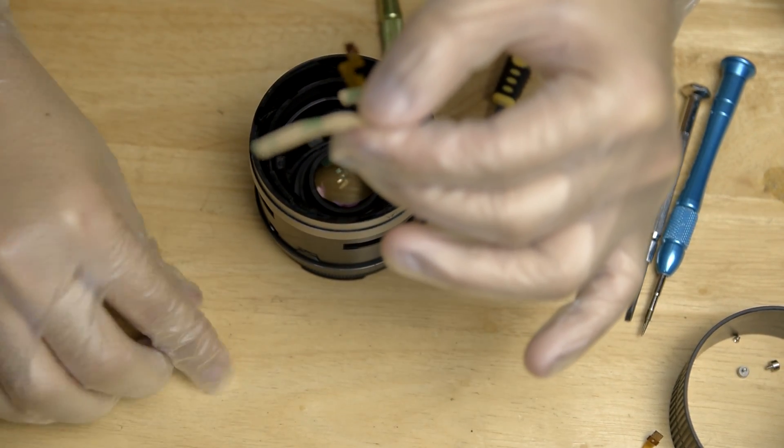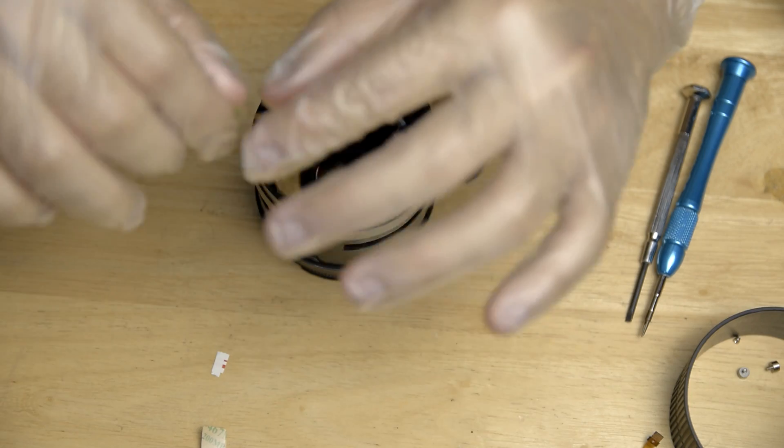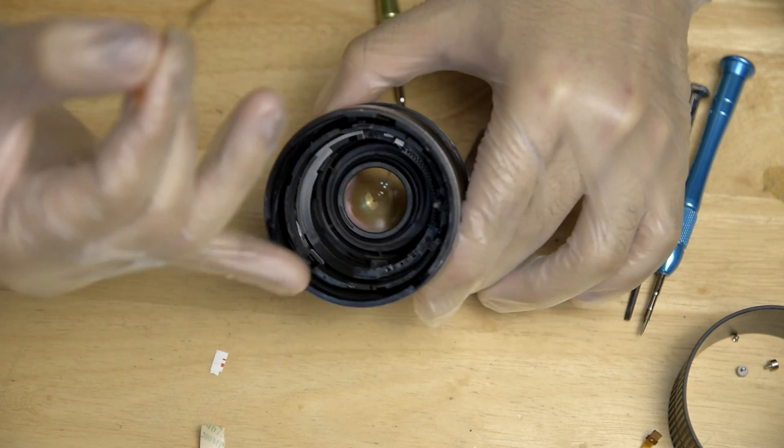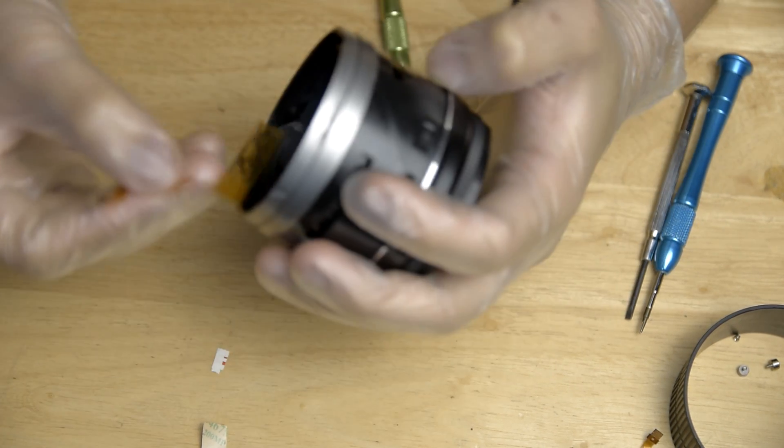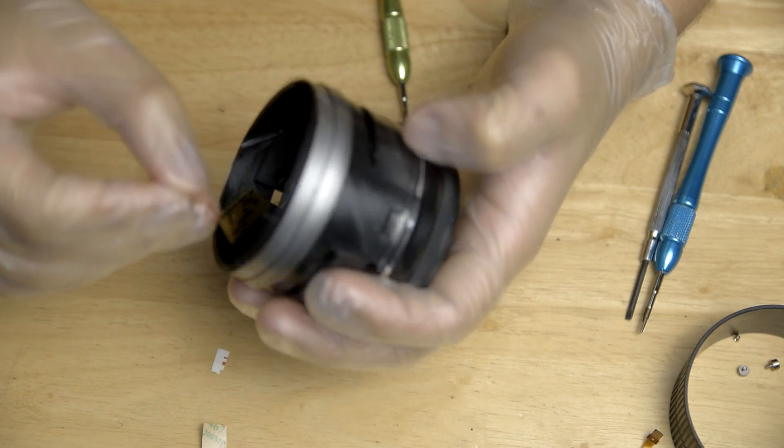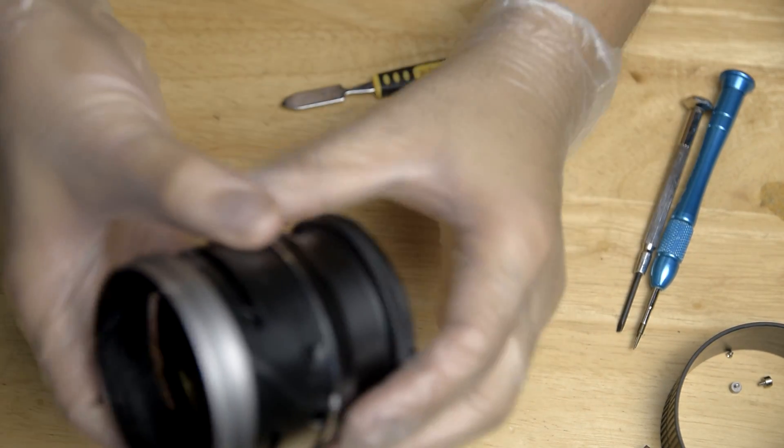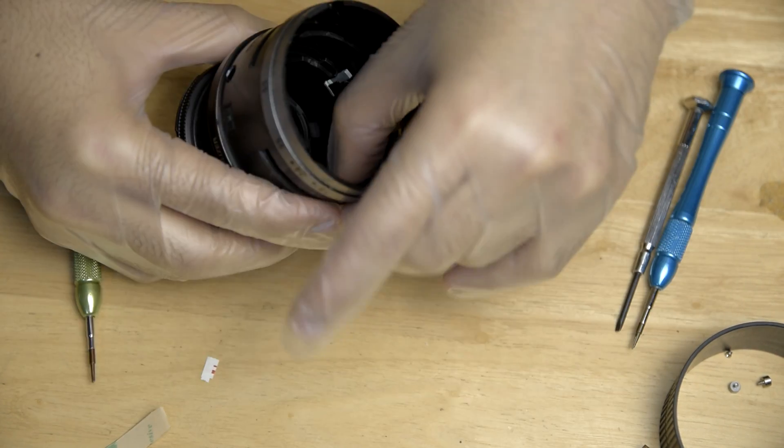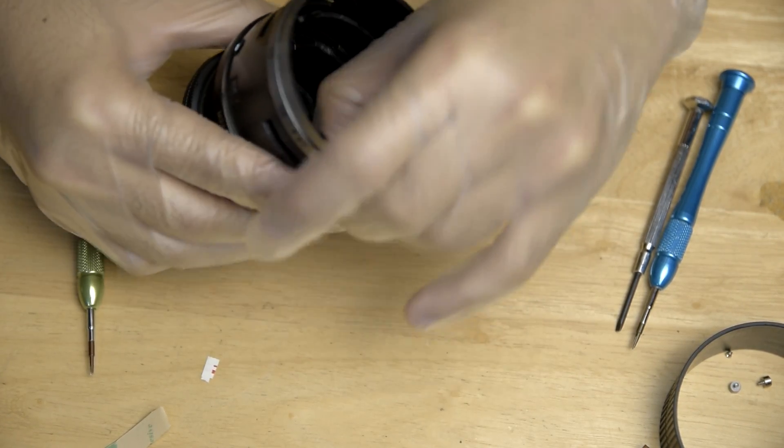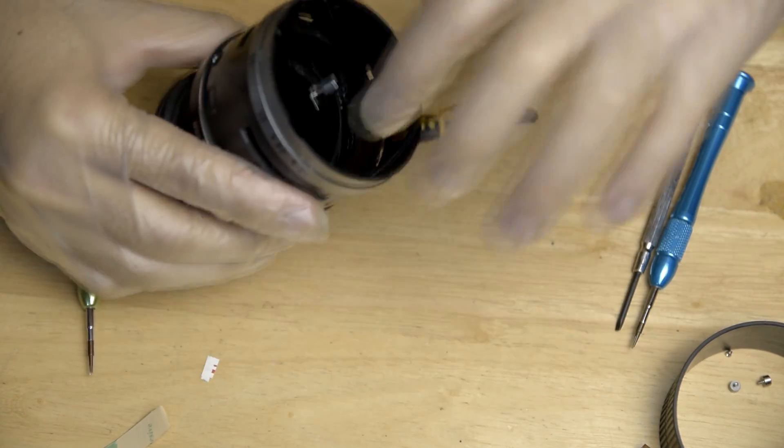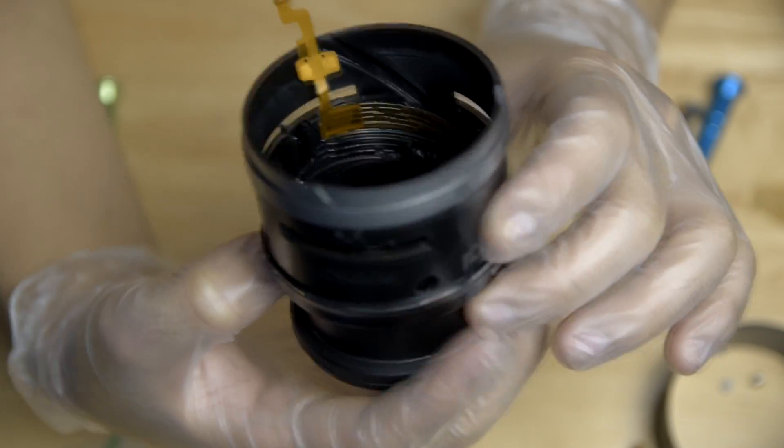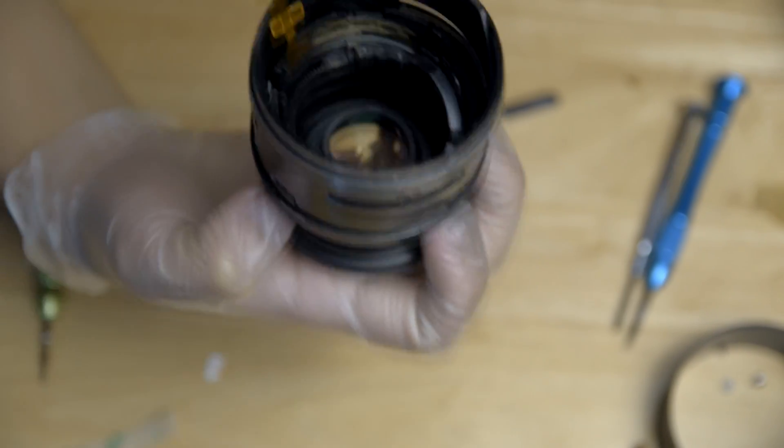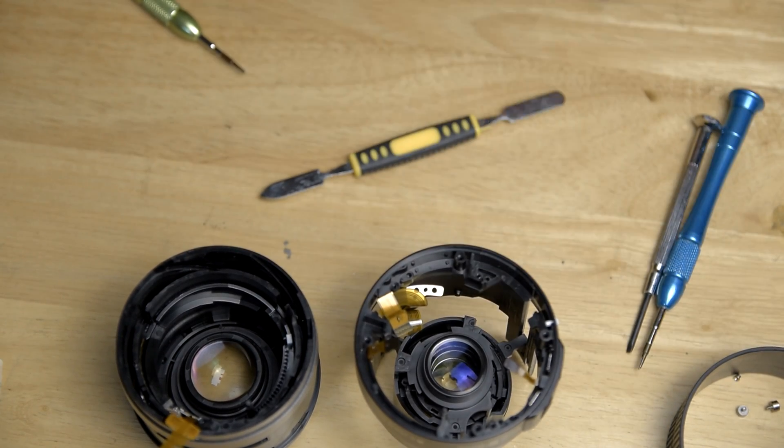It has an adhesive. Make sure that you put it at the exact same location as the old one. And this is the flex cable installed. After that, you can now go ahead and reassemble the lens.